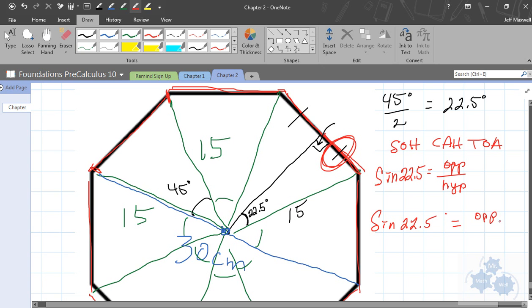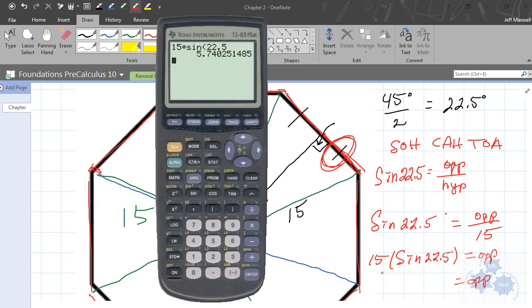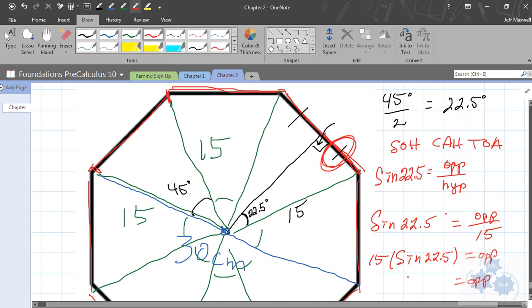Opposite, we don't know. The hypotenuse is 15. We solve. You should get on your calculator when you do this, 5.74. Does that look right to you guys? 5.74. And that's going to be centimeters. Because our original length here is centimeters.